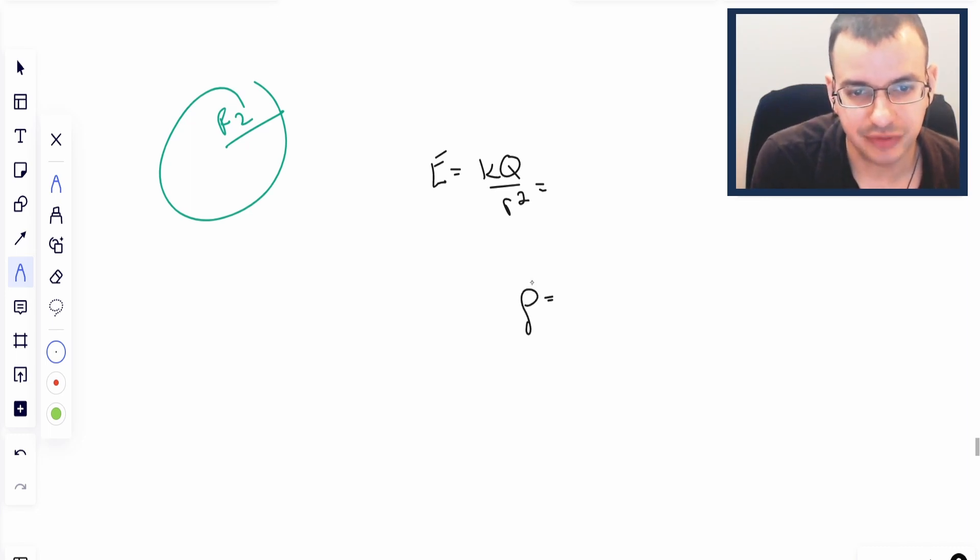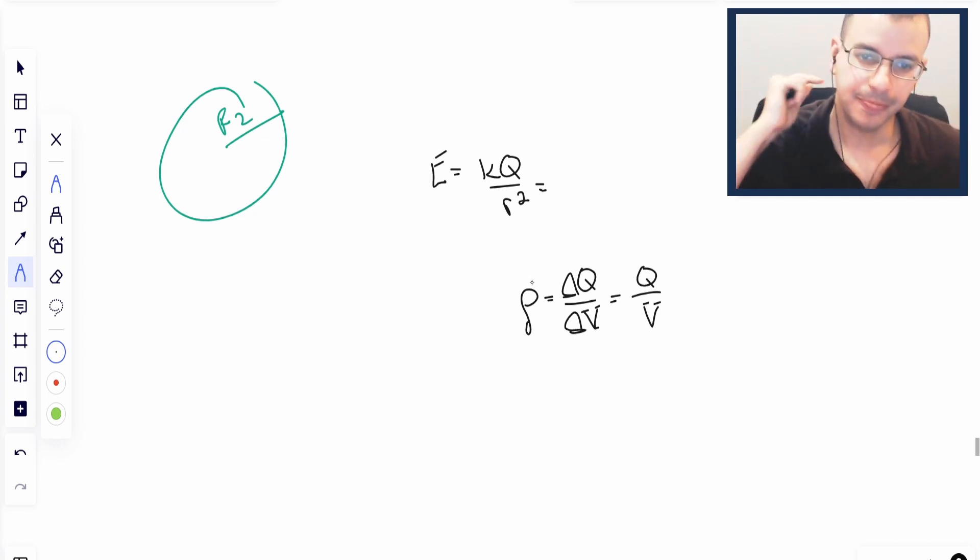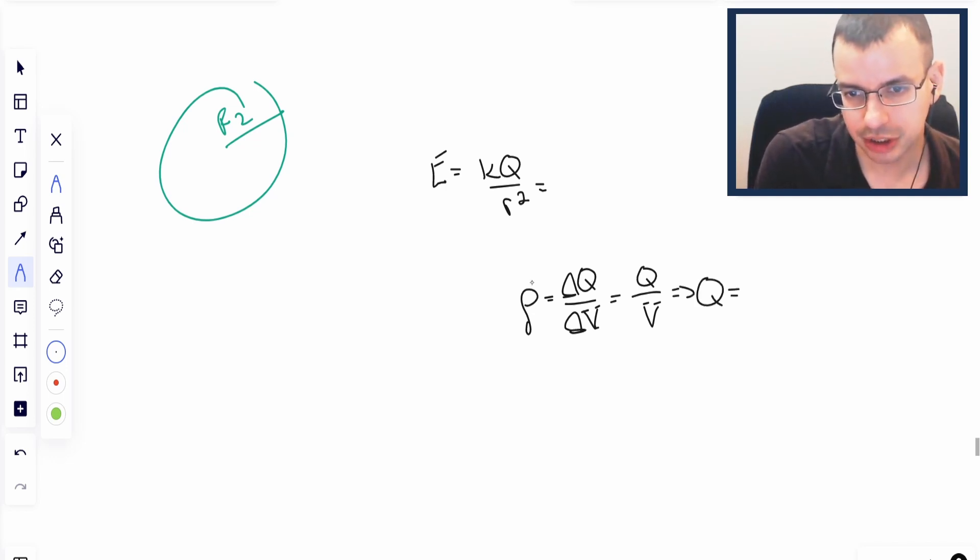Rho is defined as a little bit of Q over a little bit of volume. This is going to be the same as Q over volume for a uniform rho, volumetric charge density. So all the charge divided by all the volume gives us rho.